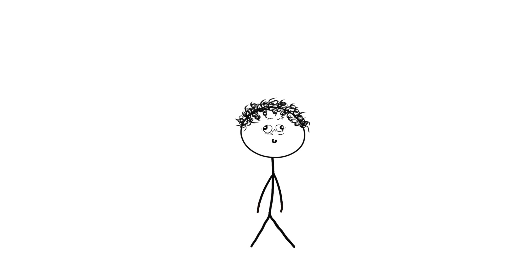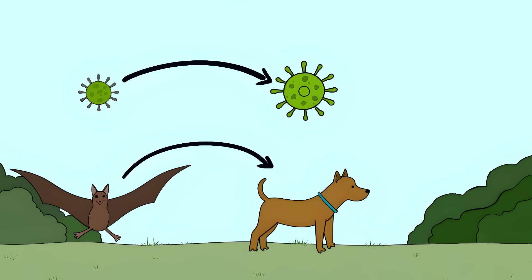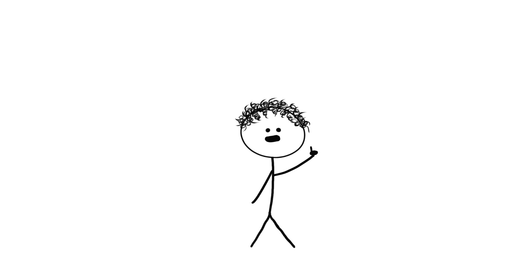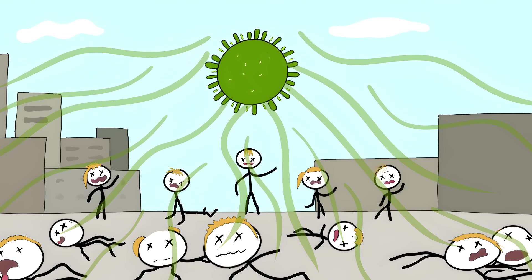The rabies virus is constantly mutating. Every time it jumps from one animal to another, it has a chance to evolve. All it would take is one mutation, making it better at spreading through the air. Then we'd have a virus that's both airborne and 100% lethal.